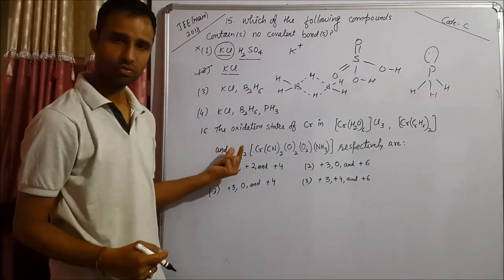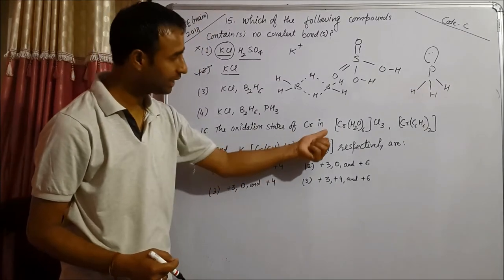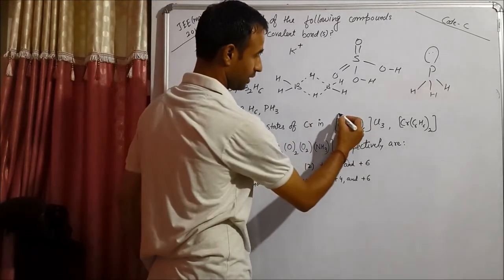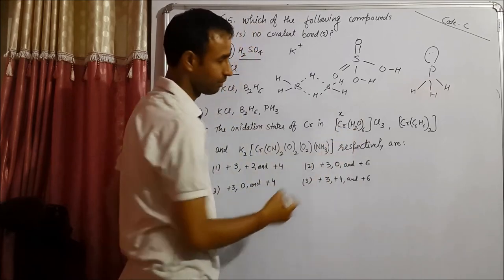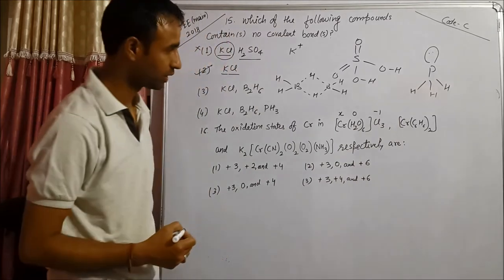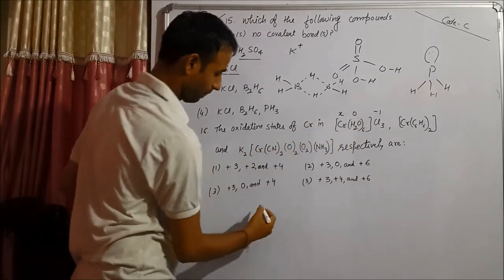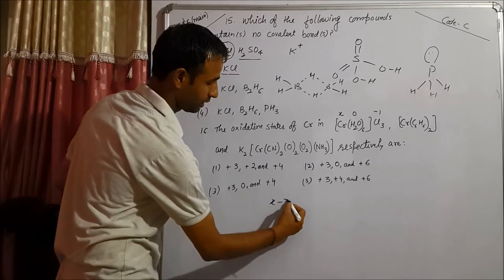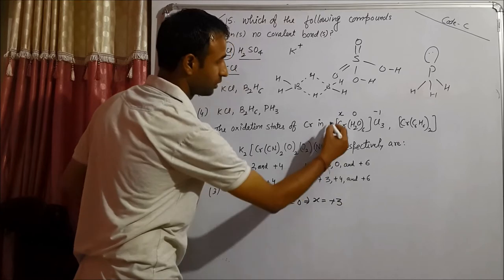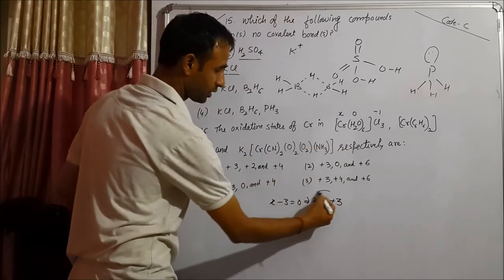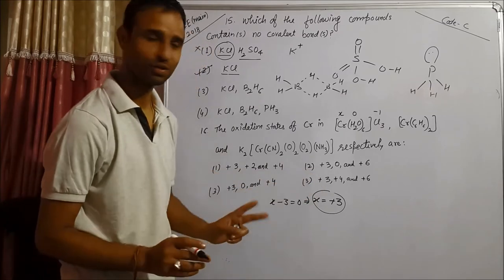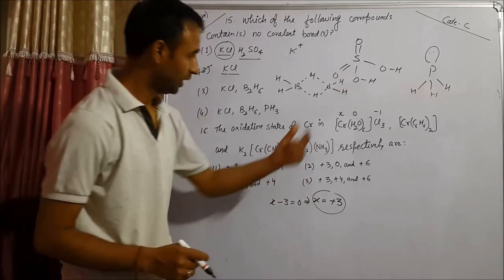Now come to this question. Oxidation states of chromium in Cr(H2O)6Cl3. If we compare, take it as x, water is neutral (0), chlorine minus one. So x minus 3 equals 0, which implies x is plus 3. For the first compound, oxidation state should be plus 3. In all cases it is plus 3, so there is no need to mention this.